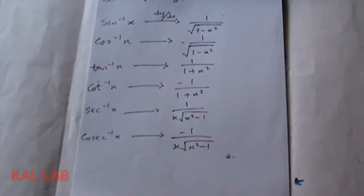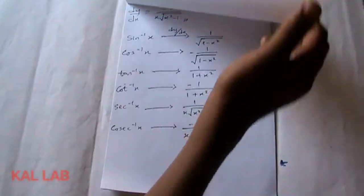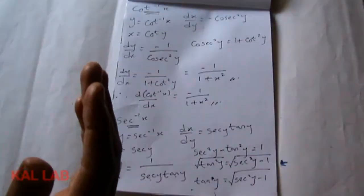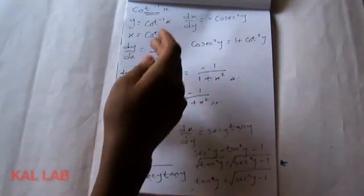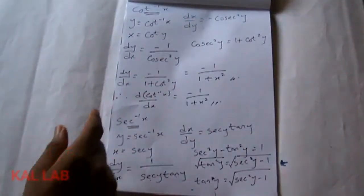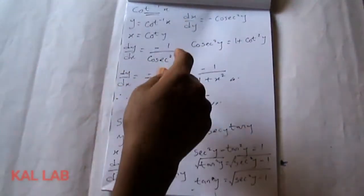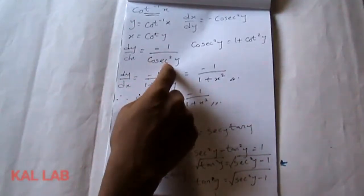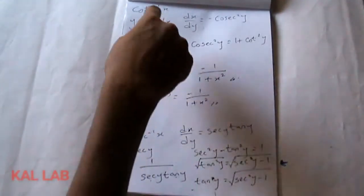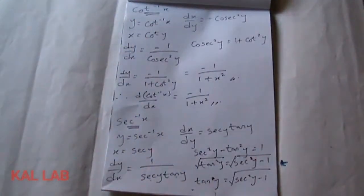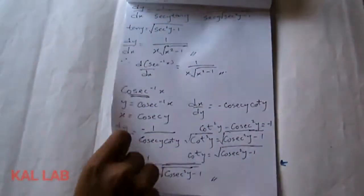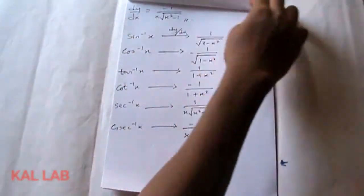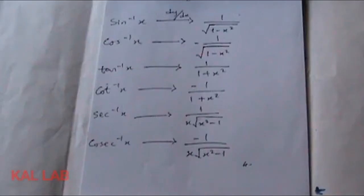I hope we understood how we derived these results. It involved a few major steps: make y a function of x, differentiate with respect to y, invert the derivative, then find a trigonometric relationship that relates the denominator back to the initial function. Thank you very much for watching — please subscribe to the channel, drop a like, and leave a comment.